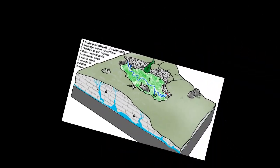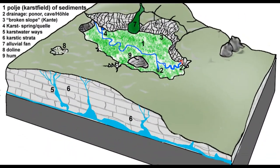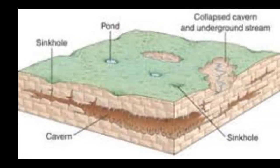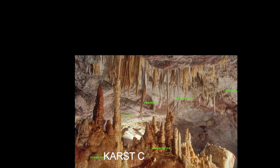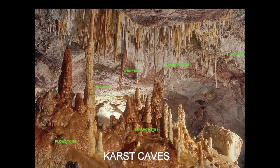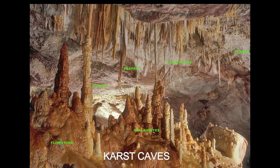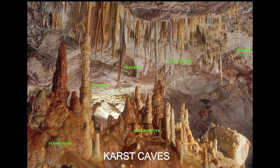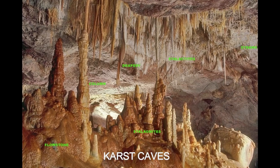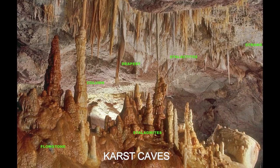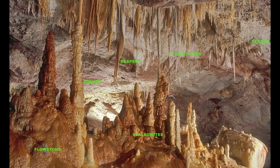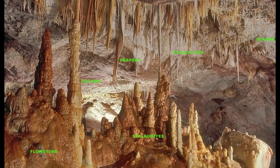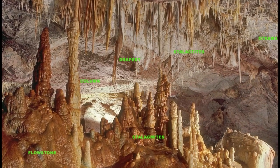Calcium carbonate dissolved into water may precipitate out where the water discharges some of its dissolved carbon dioxide. Rivers which emerge from springs may produce tufa terraces, consisting of layers of calcite deposited over extended periods of time. In caves, a variety of features collectively called speleothems are formed by deposition of calcium carbonate and other dissolved minerals.